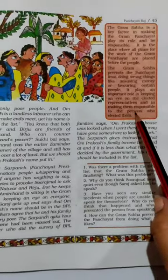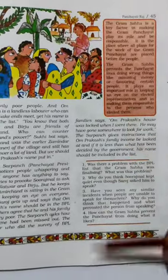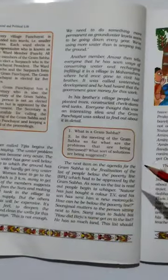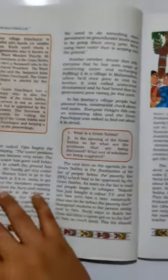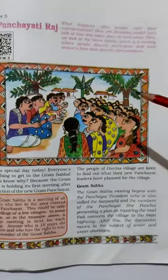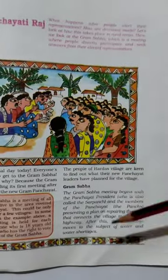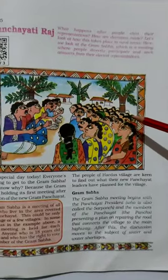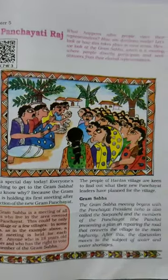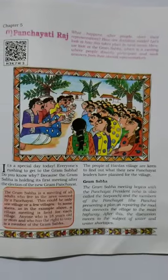जैसा इस story में हमने देखा — जो लोग ज़्यादा अमीर थे, Amir Chand के दोस्त थे — उनका नाम BPL list में था, और Om Prakash का नाम नहीं था। लेकिन जब Gram Sabha के लोगों को पता चला तो उन्होंने इसे ठीक किया। This is the topic of Gram Sabha completed. If there is any issue or difficulty, you can ask. Take care, bye.